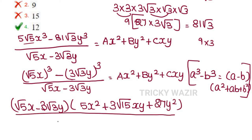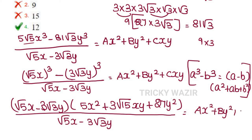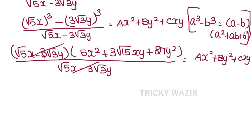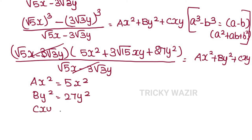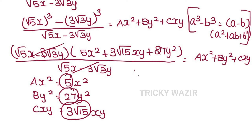So the result is 5x² plus 2·√15·xy plus 27y², divided by (√5x minus 3√3y), equal to Ax² plus By² plus Cxy. Comparing coefficients: A = 5, B = 27, and C = 2√15.